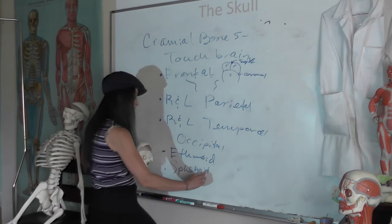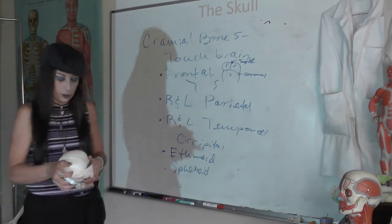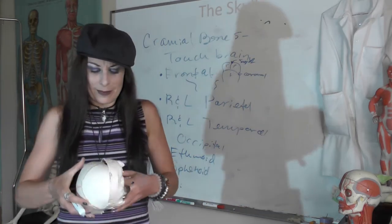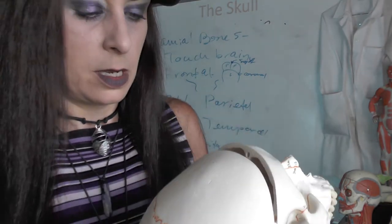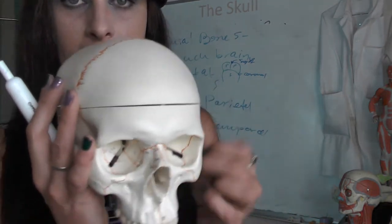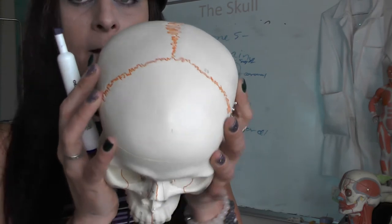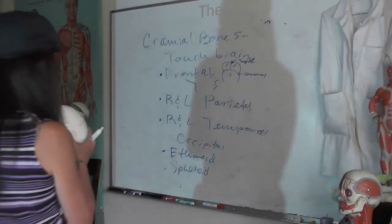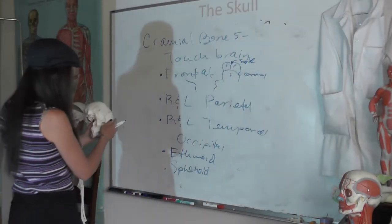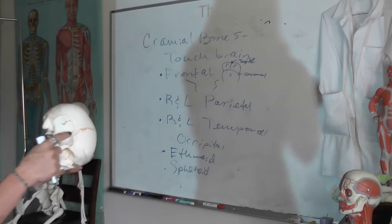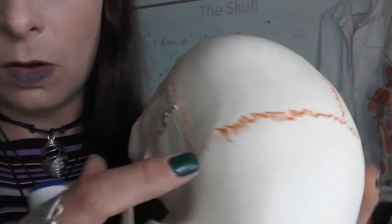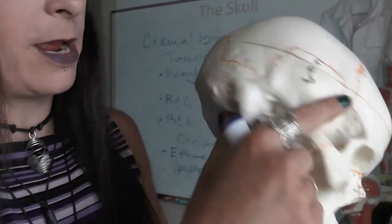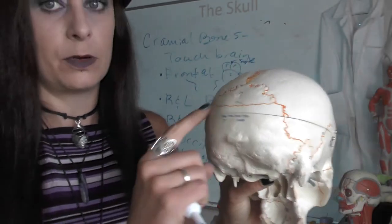I'm going to have the lab assistant take you through most of your bone markings, as it'll be easier for her to do than for me in a lecture-type fashion. But those are your cranial bones. Those are the major sutures: squamous suture right here, so — coronal, sagittal, squamous, lambdoid.